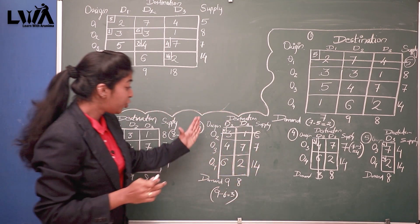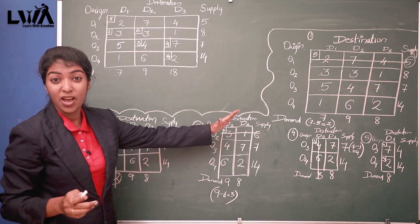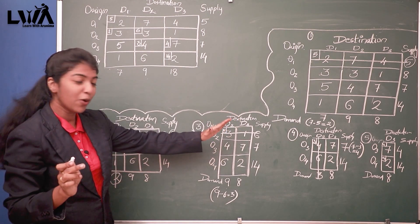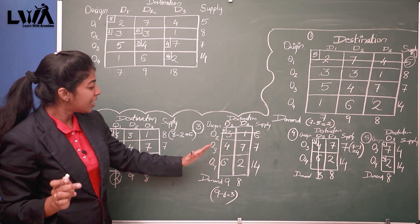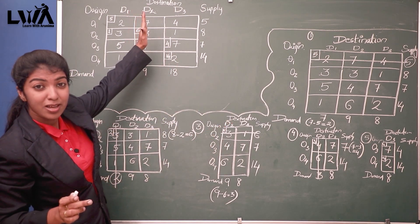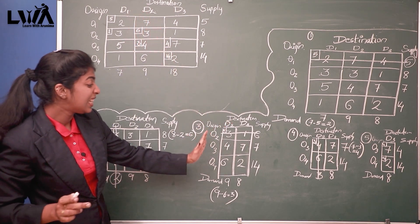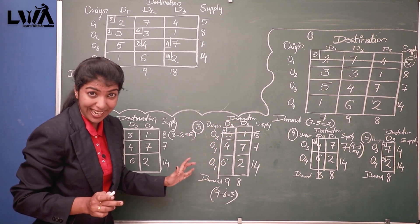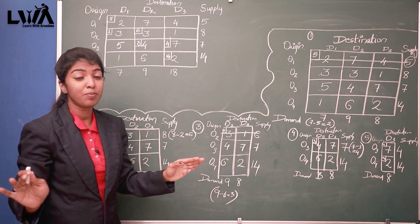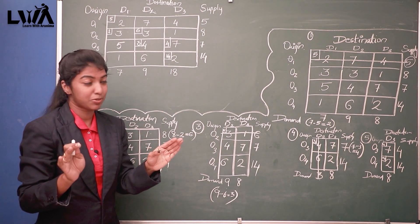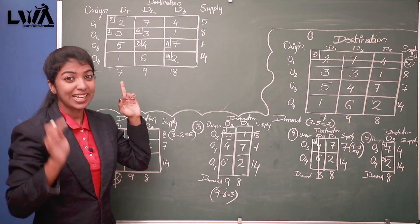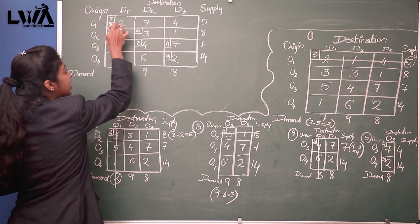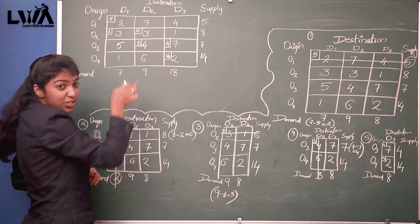In the D3–O3 area we had a 4, and in the D3–O4 area we had a 14. This is why I told you to mark all these things carefully — at the final step these allocations help us a lot. If any figure is changed, the entire problem will collapse, so this should be very clear.